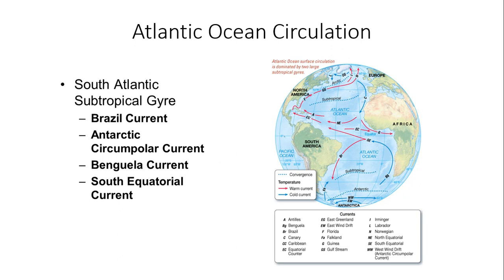Looking at the South Atlantic Subtropical Gyre in the southern hemisphere, it is composed of the Brazilian Current, the Antarctic Circumpolar Current or the West Wind Drift, the Benguela Current off the west coast of Africa, and the South Equatorial Current.